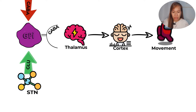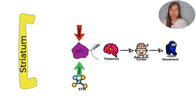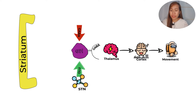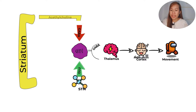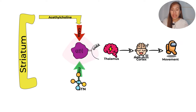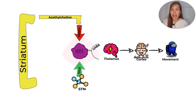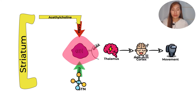The subthalamic nucleus is also activated by the striatum. In the direct pathway, the striatum will produce acetylcholine, which is another neurotransmitter, and this in turn will cause the production of GABA. If GABA is present, which is inhibitory, it will inhibit the globus pallidus internus. The globus pallidus internus will not be able to produce GABA and will not be able to inhibit the thalamus. Therefore, there will be movement.